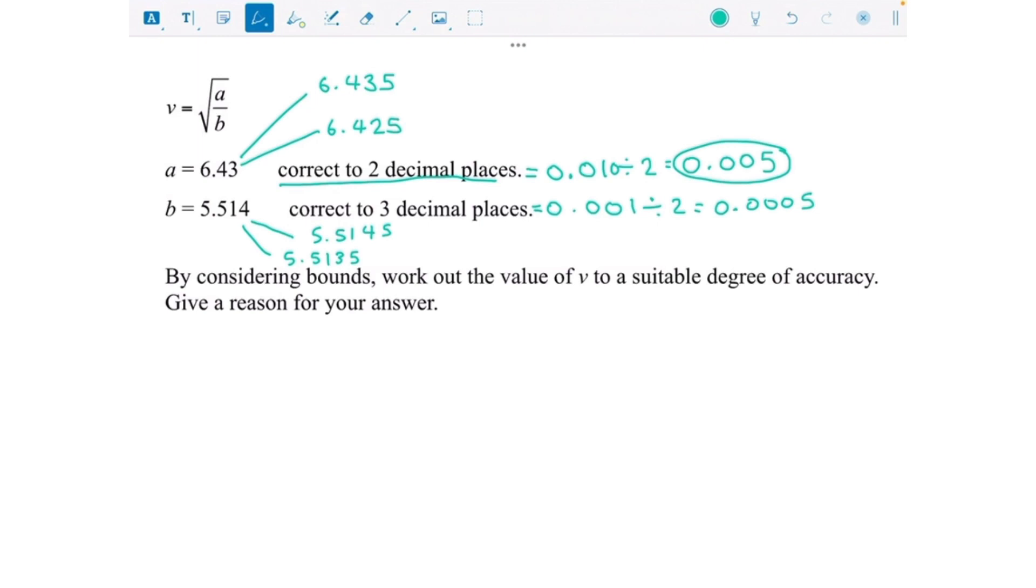By considering bounds, work out the value of v to a suitable degree of accuracy. Sometimes they ask you to make v as big as you can or as small as you can. In this case where they say by considering bounds, we're going to need to do both. So I'm going to do v upper and v lower.